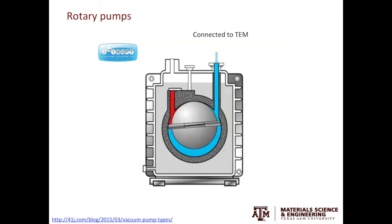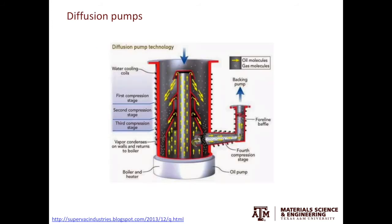The second type of pump is called the oil diffusion pump. Unlike the rotary pumps, the oil diffusion pumps have no moving parts. In the oil diffusion pump, you have the oil reservoir at the bottom and you heat that up to generate oil vapor. As the very fine oil droplets travel in the oil pump, they will grab the air molecules and condense on the pump wall. By removing the air molecules, you improve the vacuum of the system.